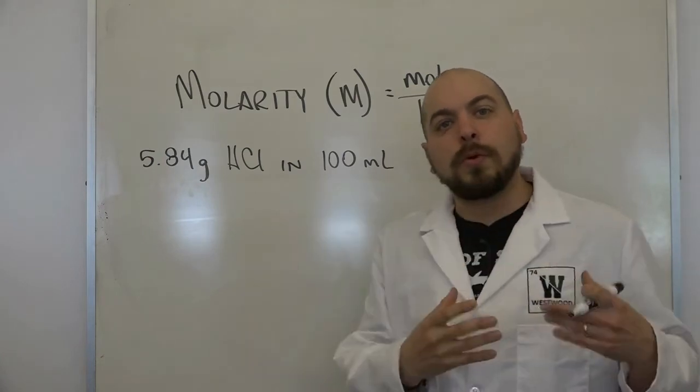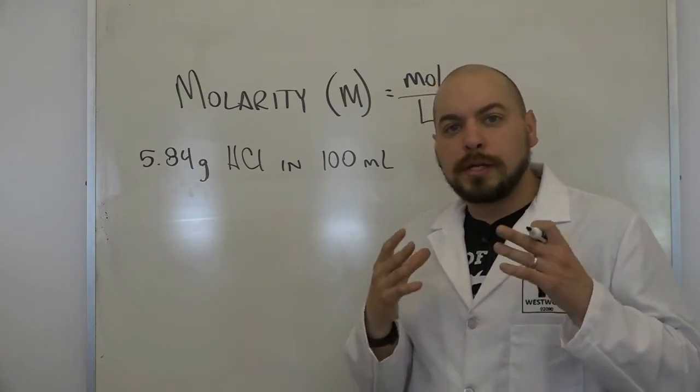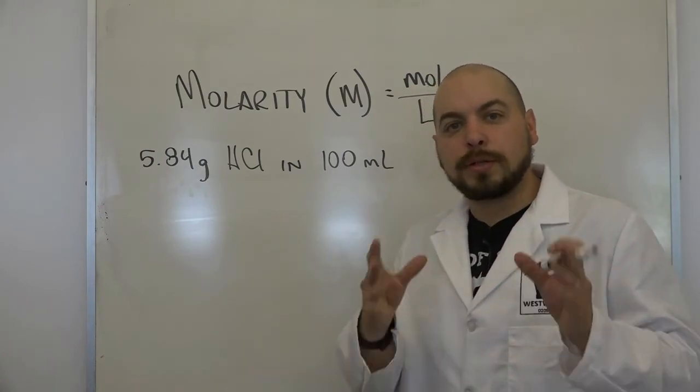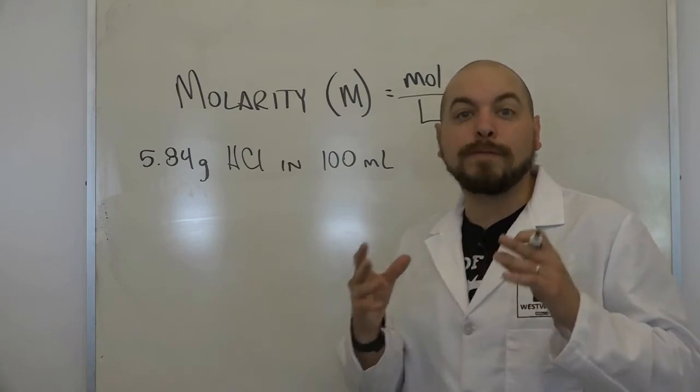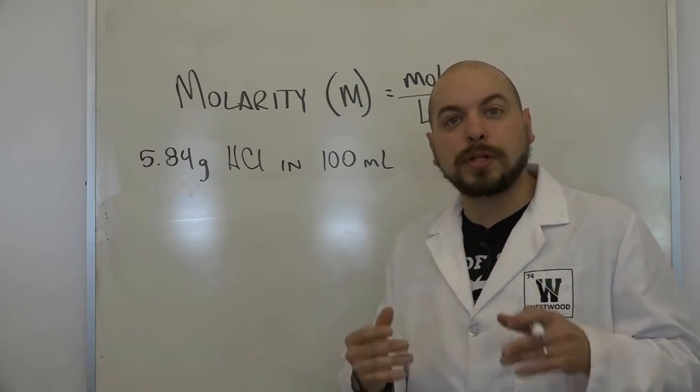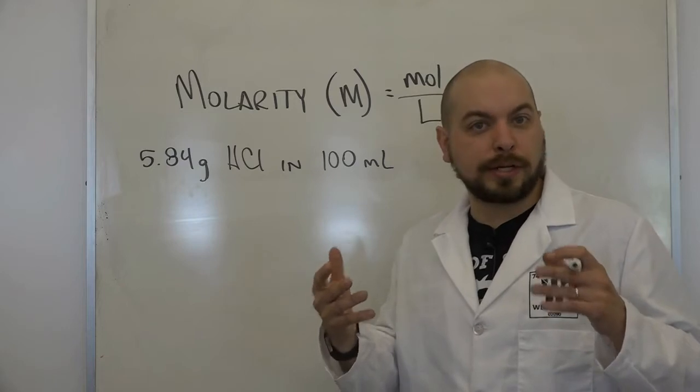In order to convert from grams to moles, remember we have to use the molar mass. So the molar mass of HCl is 36.45 grams per mole. So let's go ahead and do this. I'm going to set up like dimensional analysis.